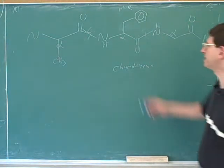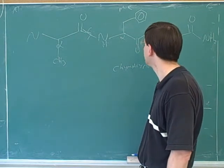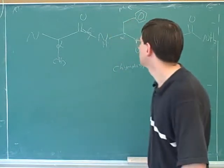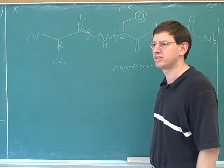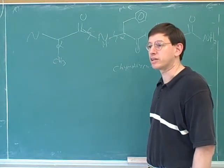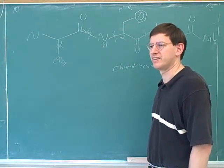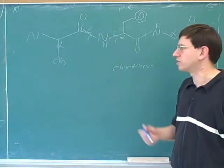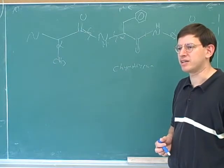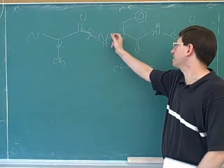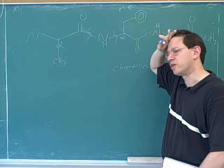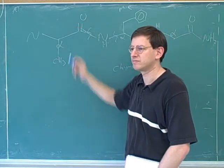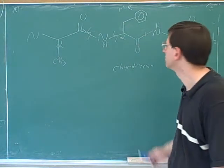Student question: why wouldn't we cleave the bond to the right of the NH — that nitrogen-carbon bond? Well, we're going to cleave the linkage between the amino acids, which is always an amide linkage. Anytime we cleave one amino acid from another, we're always cleaving an amide bond because that's the linkage between them. There's no reason for a normal nitrogen-carbon bond to break. But amide bonds can break because the carboxylic acid derivative is a good leaving group.